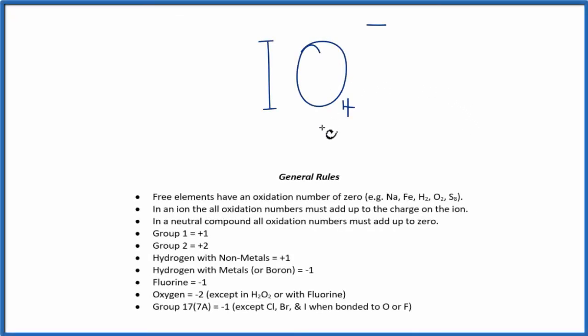In this video we'll find the oxidation numbers for each of the elements here in IO4-, the periodate ion. We'll use these rules and they'll help us figure out the oxidation numbers.